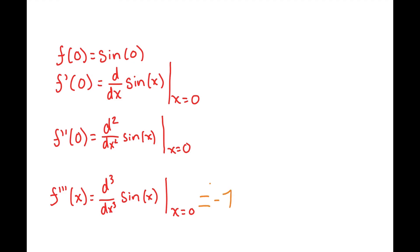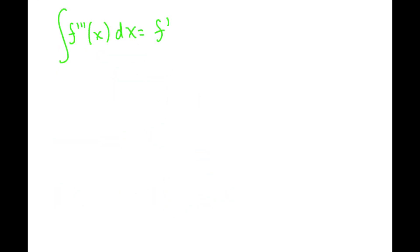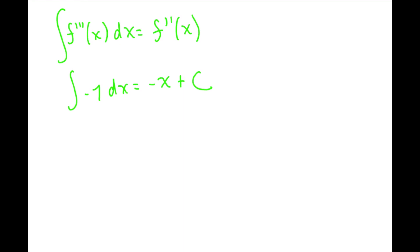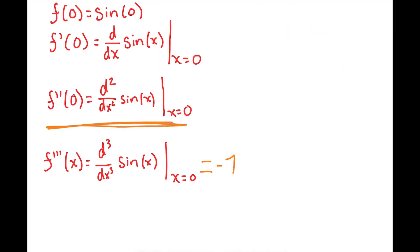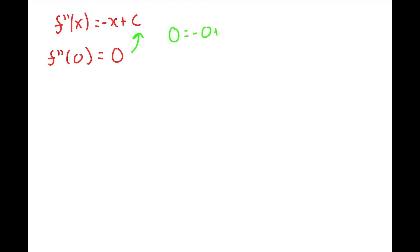Now let's step up the ladder. We can integrate f triple prime of x to get f double prime of x, which is going to be negative x plus c. But we also know that f double prime of 0 has to be equal to 0. How do we know this? Well, we said that the second derivative of our approximator function evaluated at our anchor point x equals 0 has to be equal to the second derivative of sine of x at x equals 0. The second derivative of sine is negative sine of x, and negative sine of 0 is equal to 0. So we can plug that into our equation for f double prime of x and solve for c. We get c is equal to 0, so therefore f double prime of x is just equal to negative x.